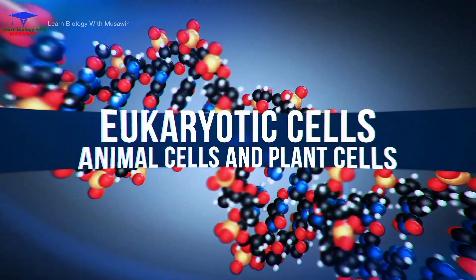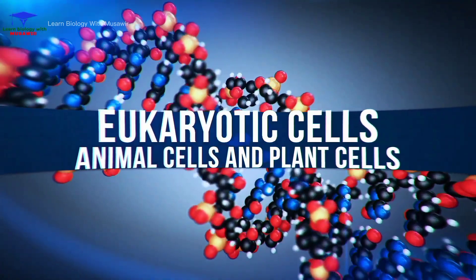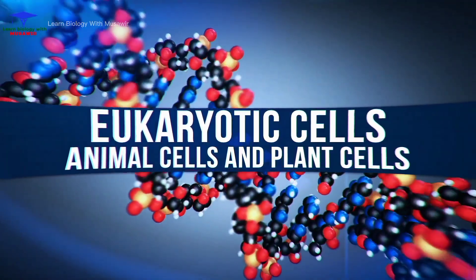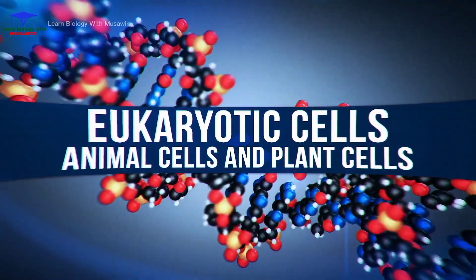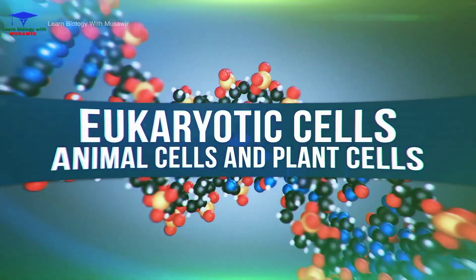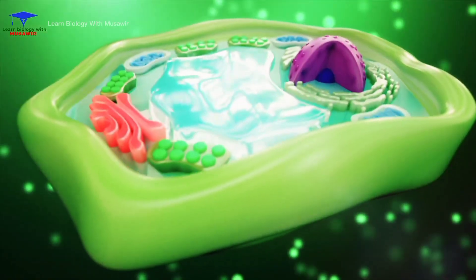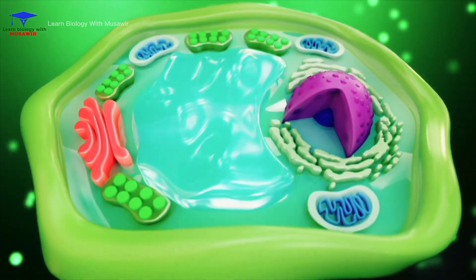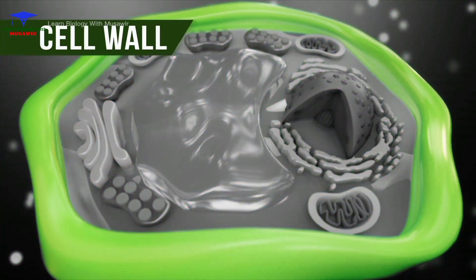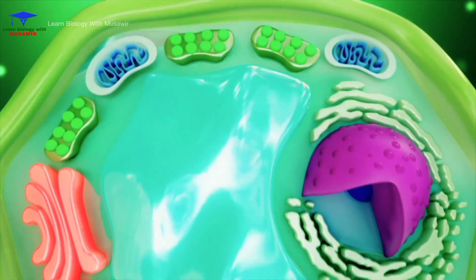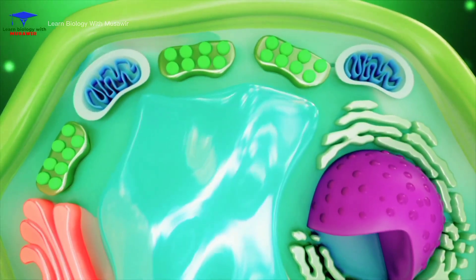There are actually two types of eukaryotic cells: animal cells and plant cells. Both types are very similar but there are three distinct differences. First, plant cells have a cell wall surrounding the plasma membrane, whereas animal cells just have a cell membrane.